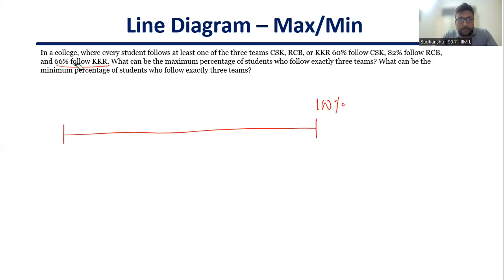If I have to maximize, what I have to do is I have to align maximum number of pieces together. I'll show you what I mean. See, I have 60% following CSK, 82% RCB, and 66% KKR. Let me put a big piece here. Let me put here 82%, 82% RCB. I was writing CSK because mentally that is the number that I have. I was not able to imagine 82% in RCB. Sorry for that.